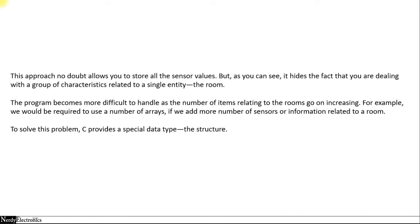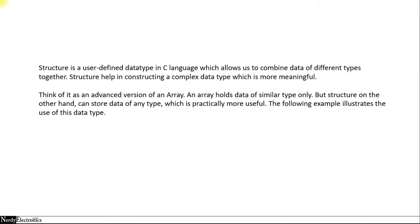We are storing all the information, but they are not dealing with a single entity — the room. The program also becomes more difficult as the number of items relating to a room increases. For example, if we want to add more sensors, we'll have to add more arrays. This problem is solved by using a special data type called the structure. Structures are user-defined data types in C. Like arrays allow us to combine data of the same types, structures allow us to combine data of different types together.